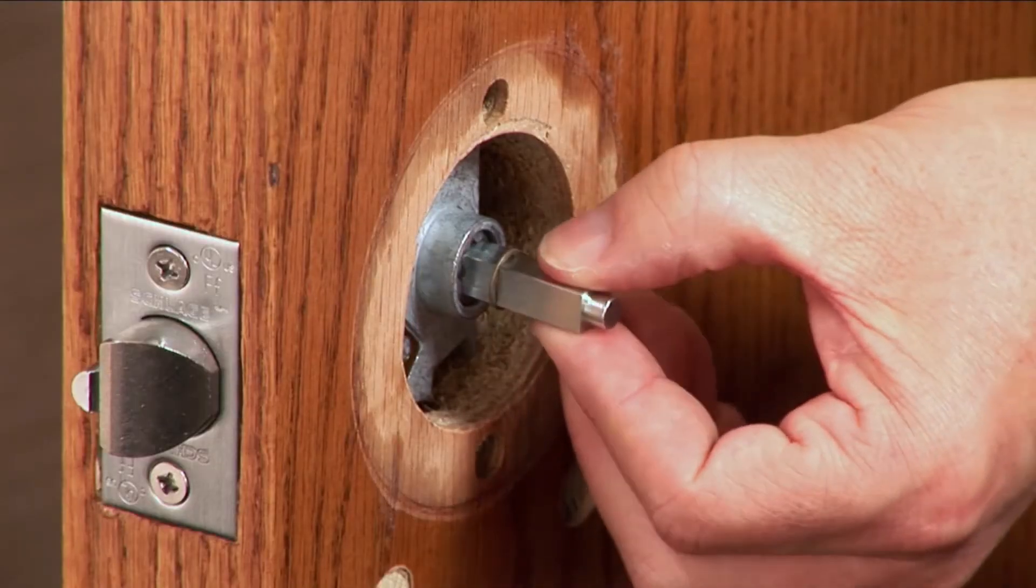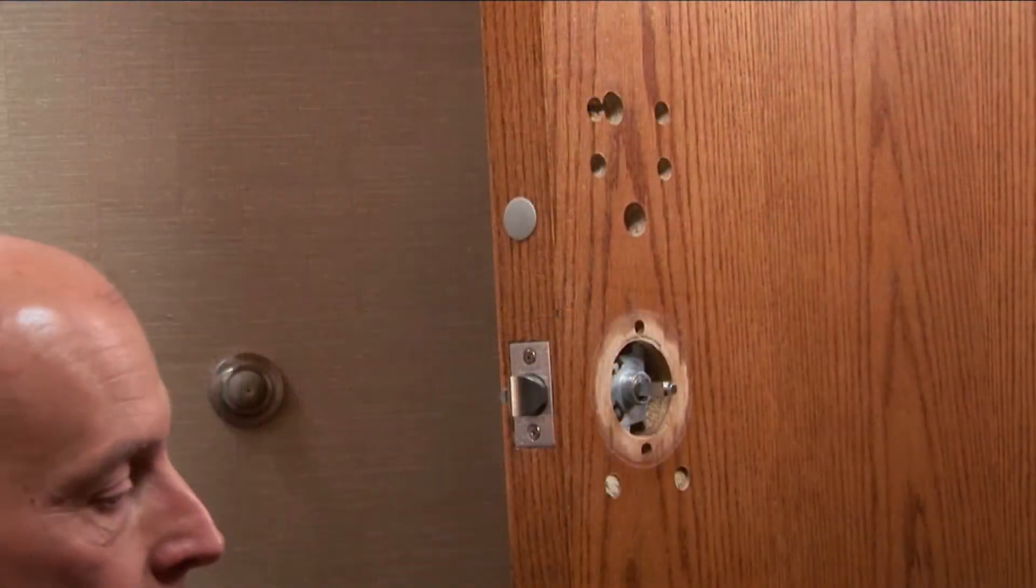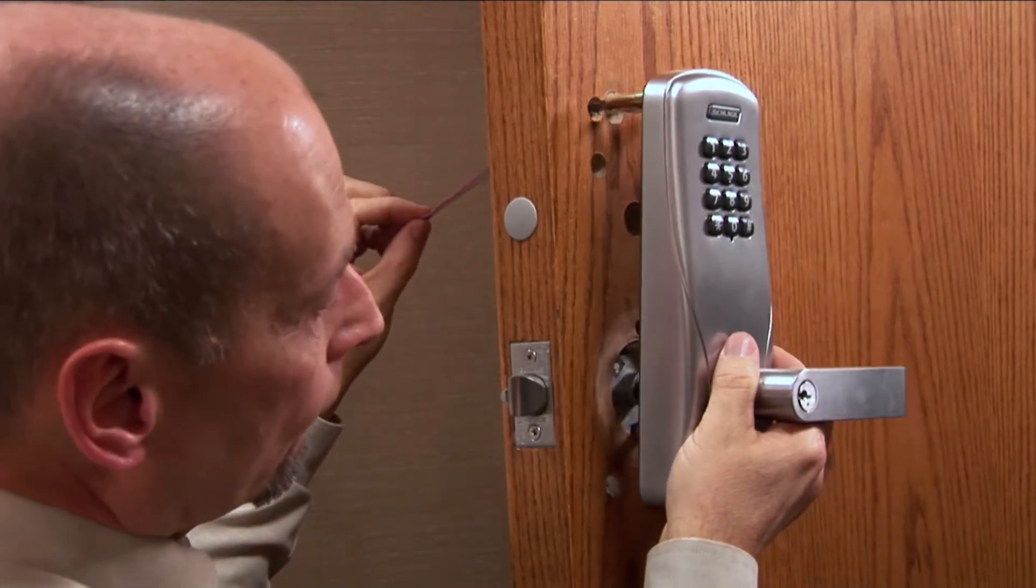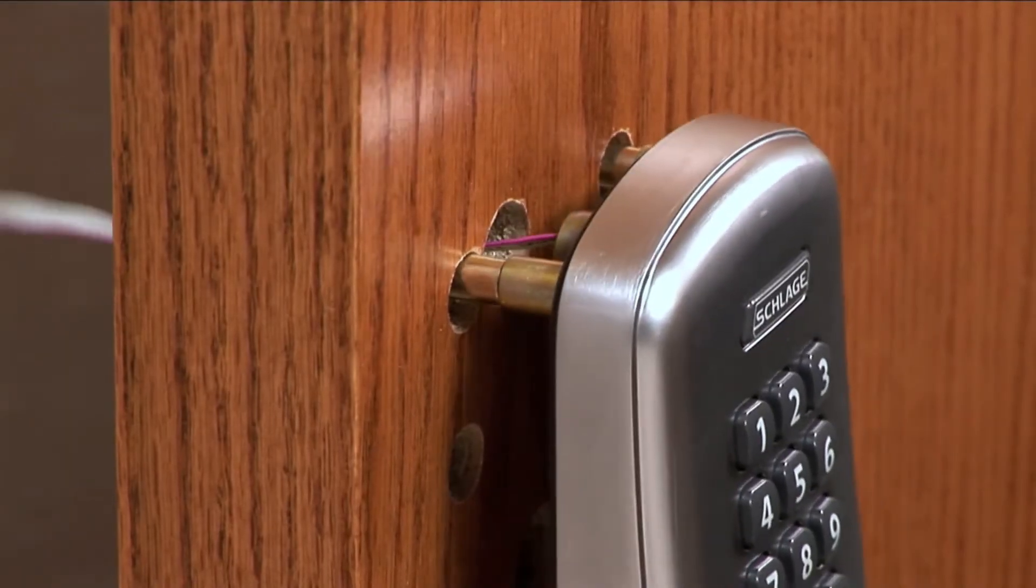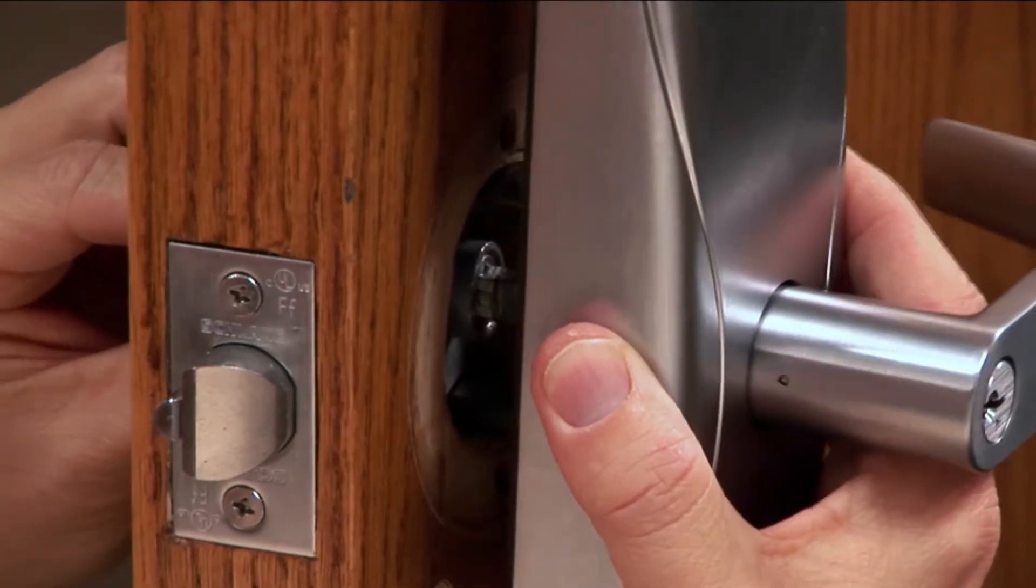Place the spindle into the center of the retractor with the post end pointing outward. Now install the outside assembly onto the door. Feed the ribbon cable through the door and, while guiding the prongs into the latch retractor, ensure the spindle goes into the outside assembly.